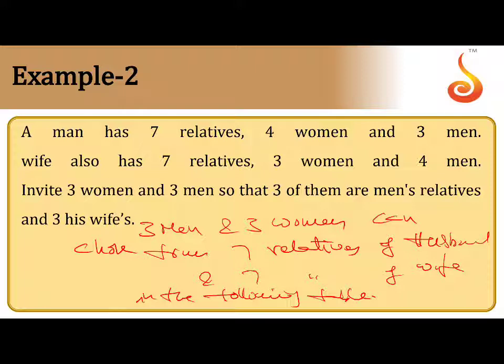So that means how to select 3 men and 3 women. Choose from 7 relatives of husband and 7 relatives of wife. So there are different combinations will come here. What are the different combinations which comes here?